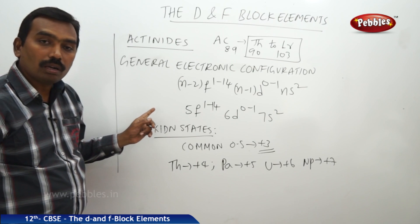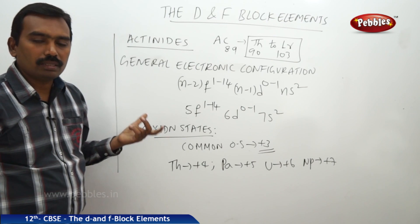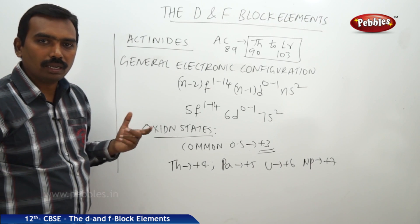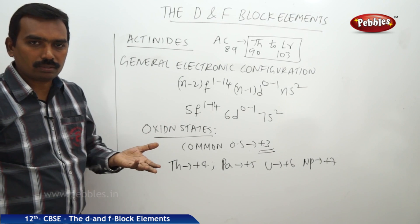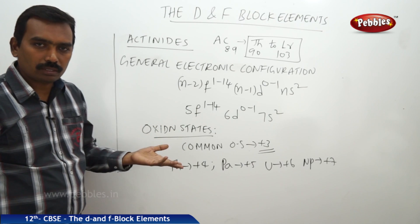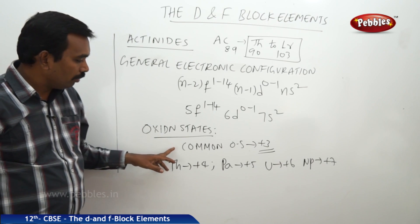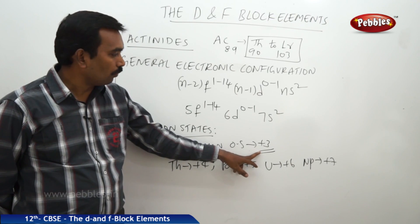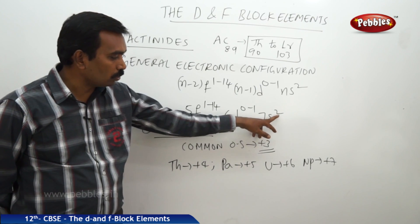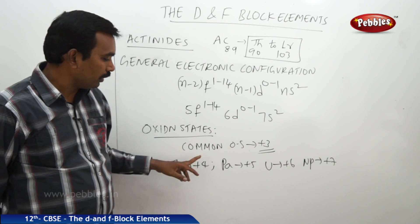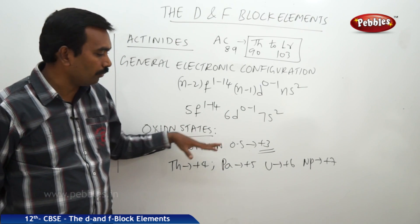Looking at the oxidation states: basically these are metals, like lanthanides and transition elements, but they are less metallic than alkali and alkaline earth metals. These elements lose electrons and exhibit positive oxidation states. In general, they lose 3 electrons — 2 from the 7s subshell and 1 from the 6d subshell — giving a common oxidation state of +3.